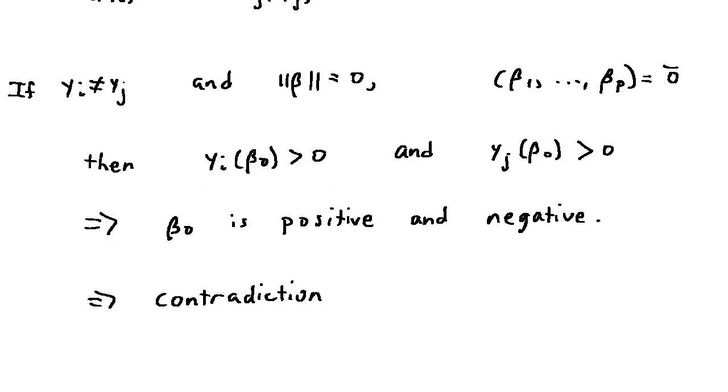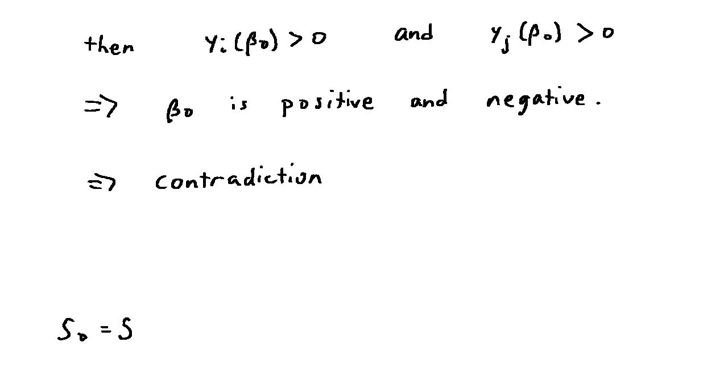So therefore, s is a subset of s0, and certainly s0 is a subset of s, so they're actually equal. So s0 is equal to s.